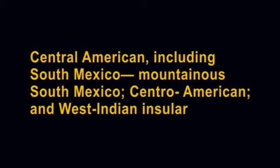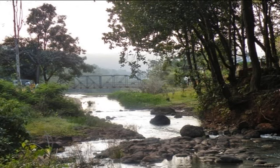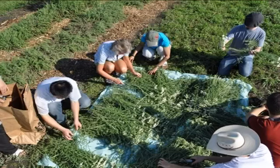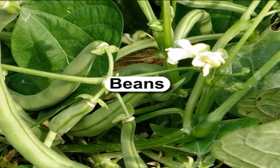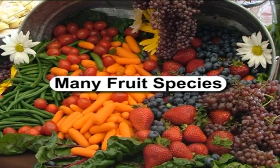Sixth is the Central American center, including South Mexico, mountainous South Mexico, Central American and West Indian insular regions. The Central American center was the place of origin of about 90 food, industrial and medicinal species, including corn, long fiber cotton species, cocoa, several species of beans and squash, and many fruit species.